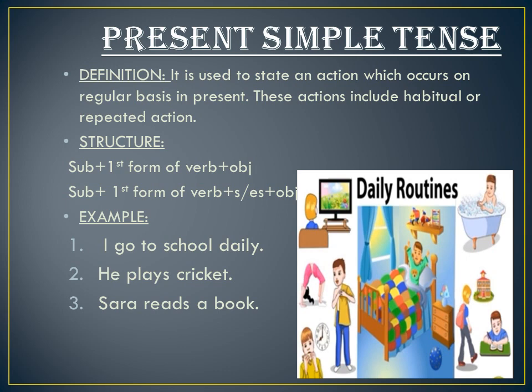Keep in mind that while using the third person singular, you will add 's' or 'es' with the verbs. Examples: 'I go to school daily,' 'He plays cricket,' 'Sarah reads a book.' While making negative and interrogative sentences in simple present tense, we use helping verbs 'do' and 'does.' With the third person we use 'does,' and when using 'does' there is no need to add 's' or 'es' with the verb.